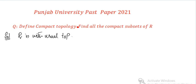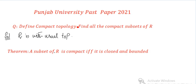I have uploaded a lecture on topology previously, and I have written a statement here. In that first lecture, I proved this theorem: a subset of R is compact if and only if it is closed and bounded.